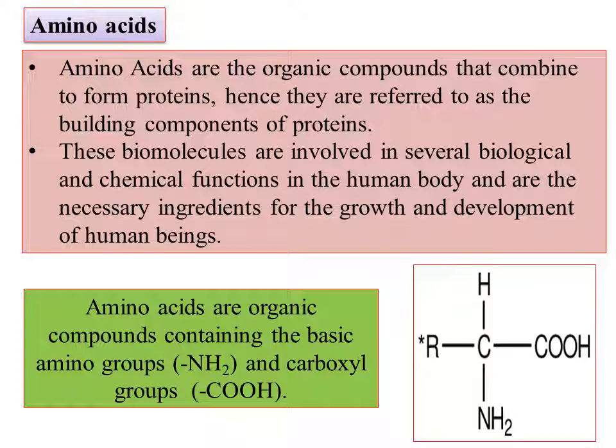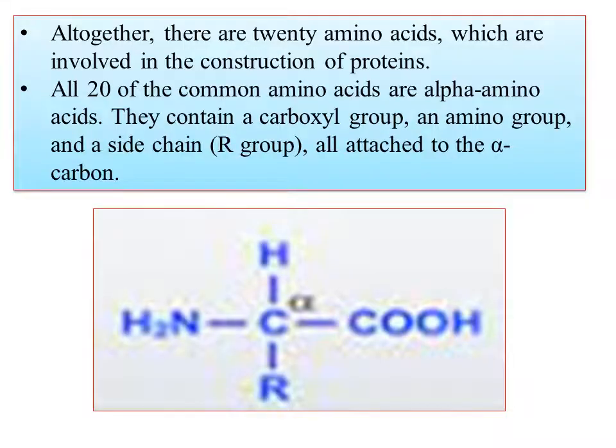Amino acids are also amphoteric in nature. The COOH group is going to react with a base to give a salt, and the NH2 group is going to react with an acid to give a salt. Because in the same molecule you have both acidic and basic units. All amino acids discussed here are alpha amino acids.